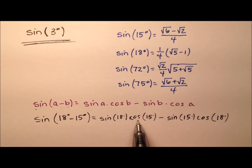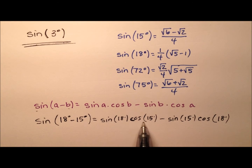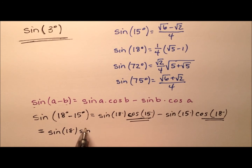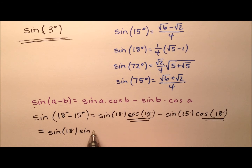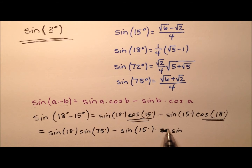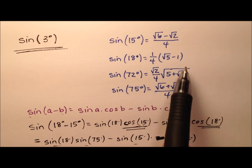A couple of things about these cosine values: since the videos we started with were finding exact values of sine, I'm going to convert these cosines into sine values. Complementary angles have the relationship where the cosine of one angle equals the sine of its complement. So cosine of 15 degrees turns into the sine of 75, and the cosine of 18 degrees — its complement is 72 — becomes the sine of 72 degrees. So you'll see these four values we have written down right here.